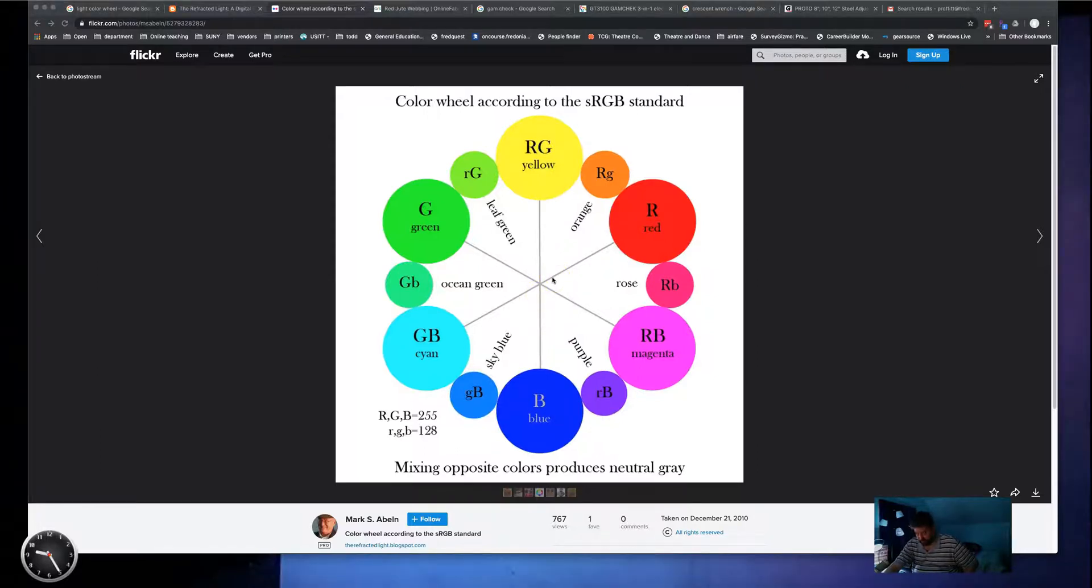Then we have our secondary colors. They're a mix of all the primaries. So red and green make yellow. Green and blue make cyan. And blue and red, of course, make magenta. Now, again, if you want to mix white light, you could mix the secondary colors, the magenta, cyan, and yellow. And these will also make white light.